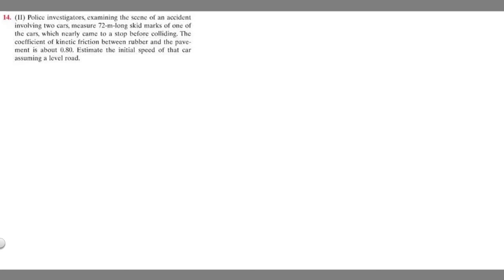The first thing we want to do whenever we do a problem like this is draw a free body diagram of our object. In this case, we have a car on a road, so here's our car on the road.